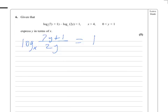Now we take inverse logarithms, which is x to the power in this case, so 7y plus 1 divided by 2y equals x to the power 1. And now we need to make y the subject.